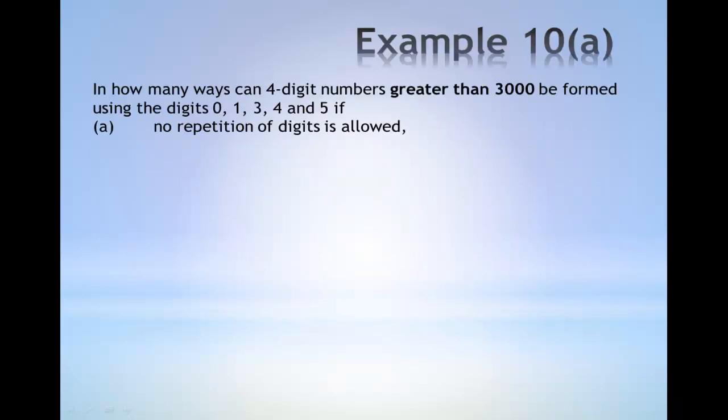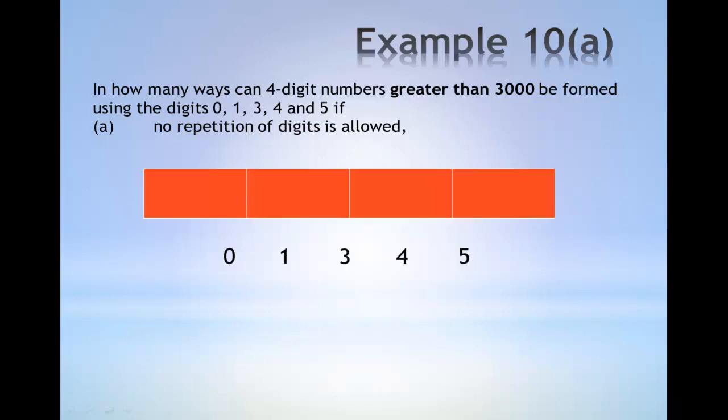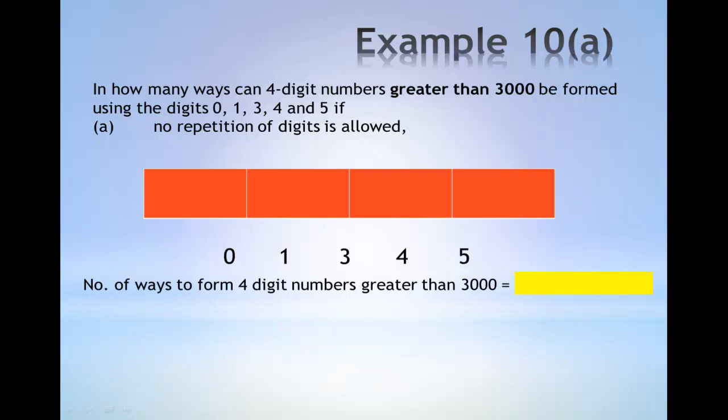Example 10: In how many ways can 4-digit numbers greater than 3000 be formed using digits 0, 1, 3, 4 and 5 if no repetition of digits is allowed? Consider the 5 digits and the 4 possible slots. The number of ways to form 4-digit numbers greater than 3000 is given by choosing the first digit to be either 3, 4 or 5, of which there are 3 possible choices.